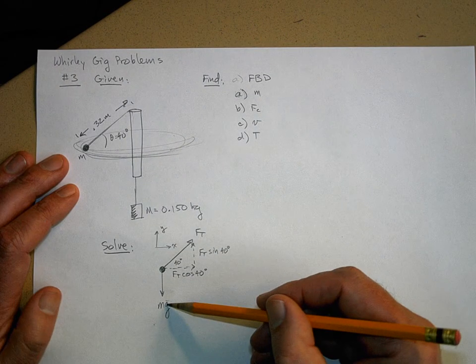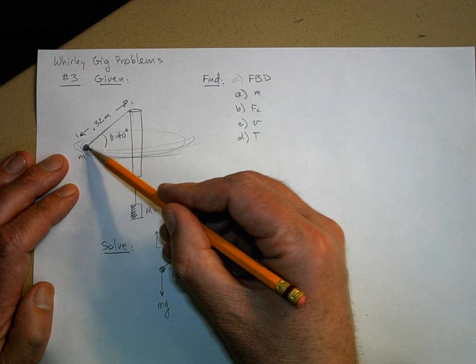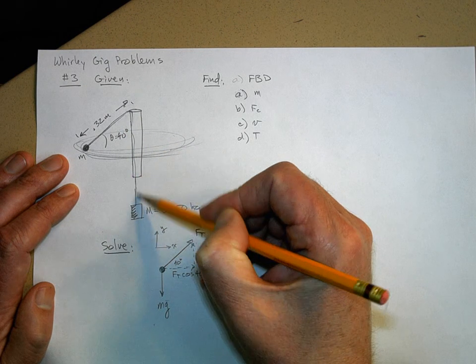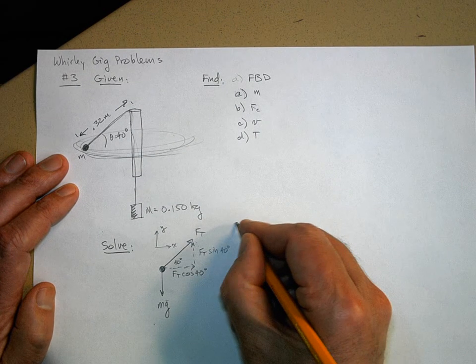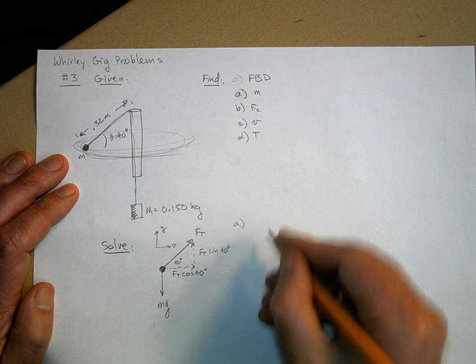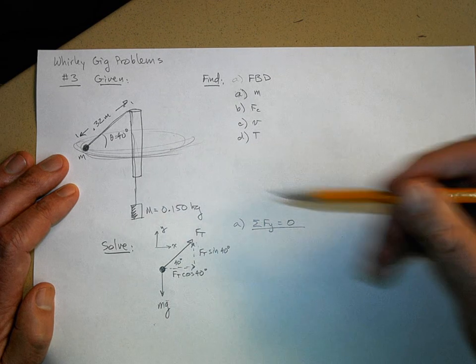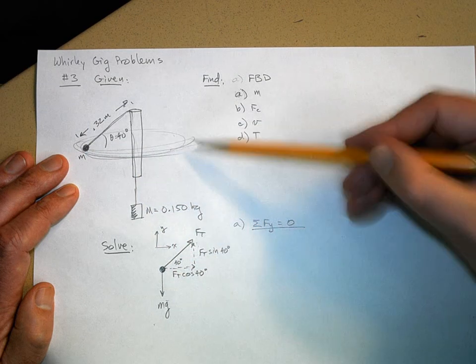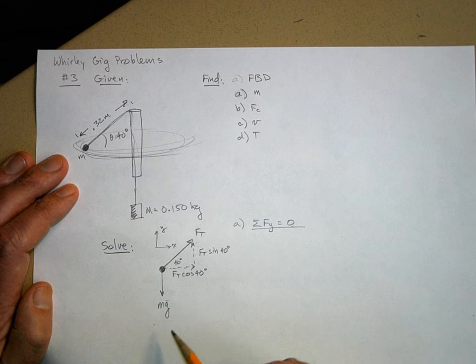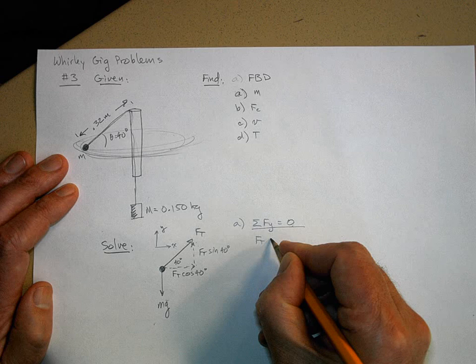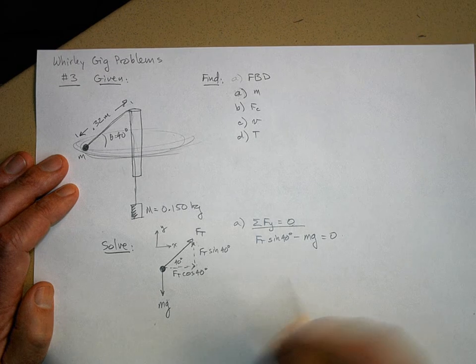Now we want to know what this mass is. We also need to know what the tension force is. We're going to assume the tension force is everywhere the same in this string. For part A, I can sum the forces in the y direction equals zero. Why? Because this rubber stopper is moving in this flat circle, but it's not accelerating up or down at all. So FT sine 40 degrees minus mg equals zero. This lets us solve for m.